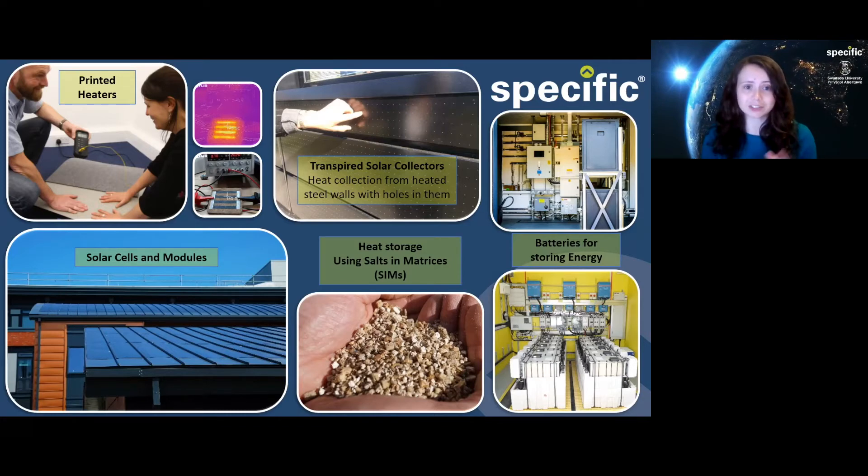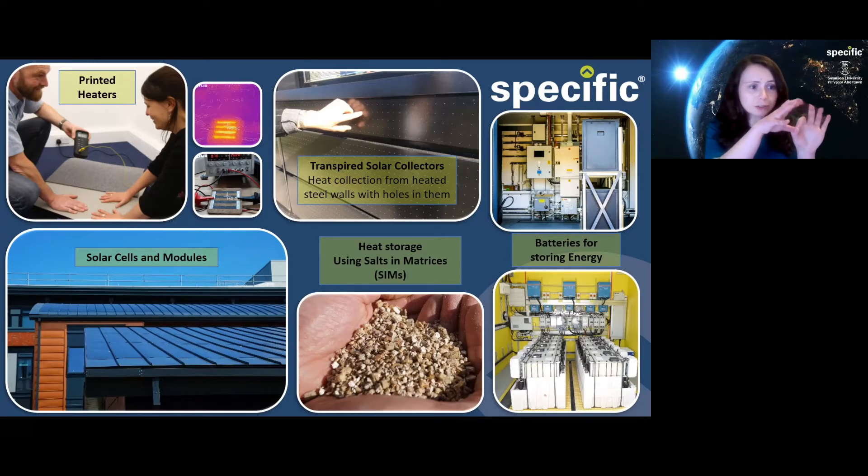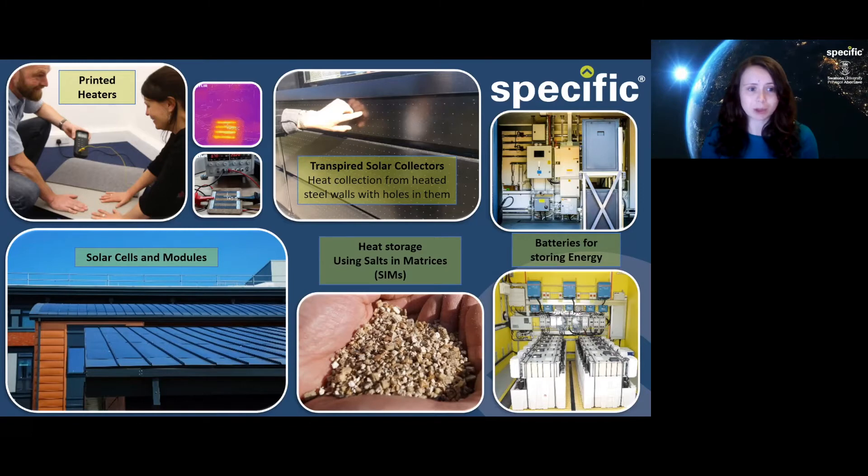Transpired solar collectors have lots of tiny holes in metal sheets on the outside of a building that can draw in warm air and then use it to heat up homes.